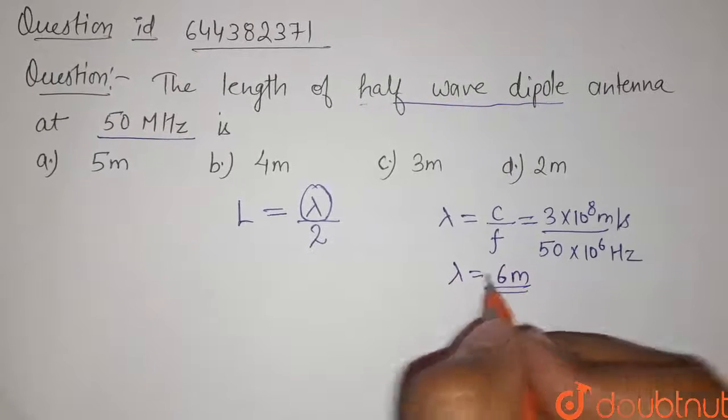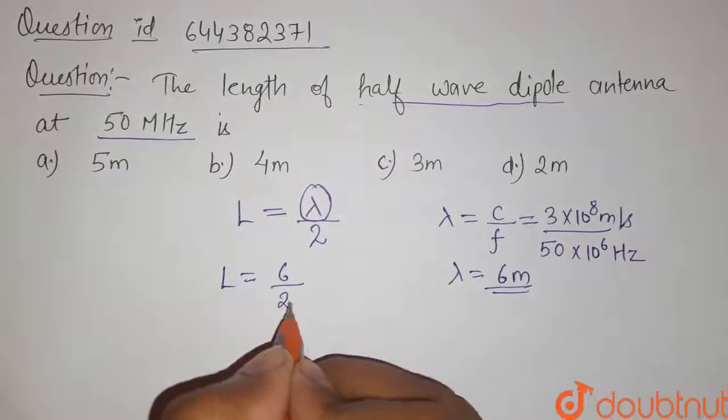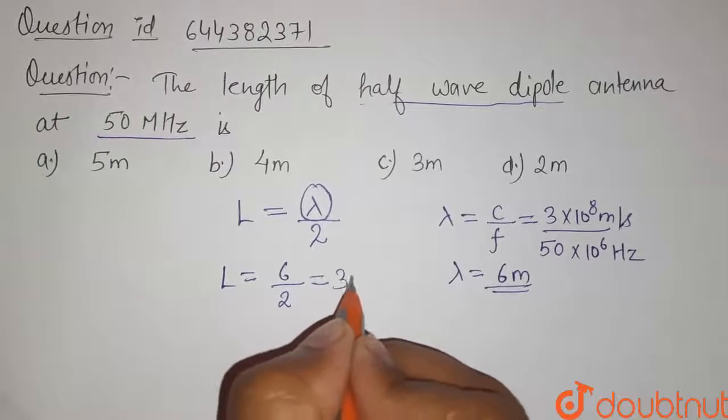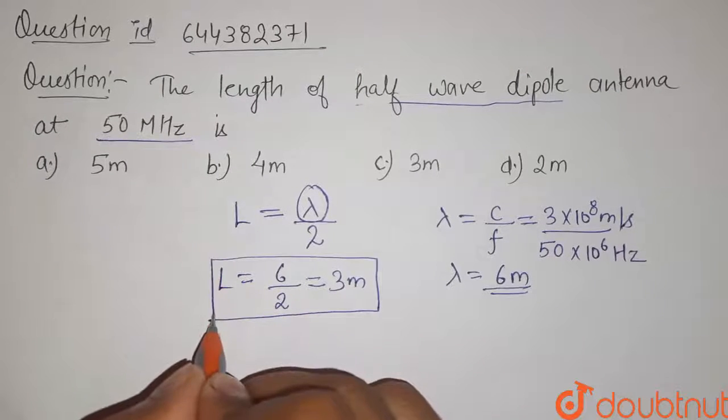Now the length of antenna is given by lambda by 2, that means 6 divided by 2. So it will be equals to 3 meter. So this is the length of half wave dipole antenna.